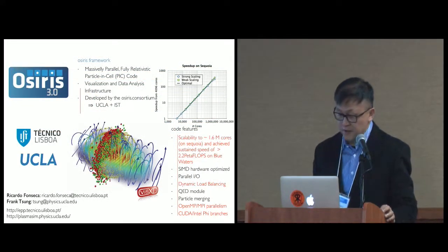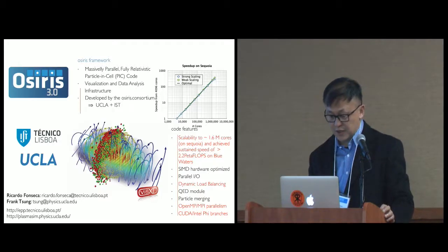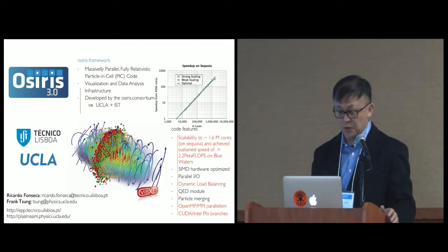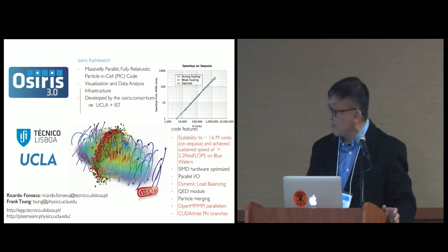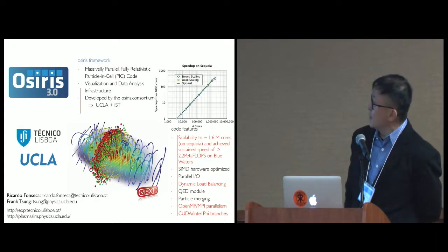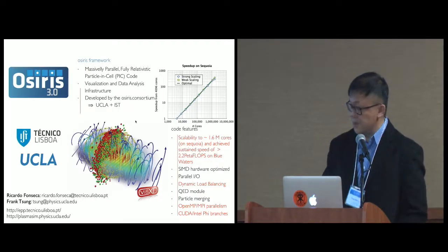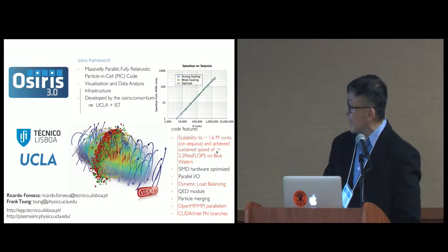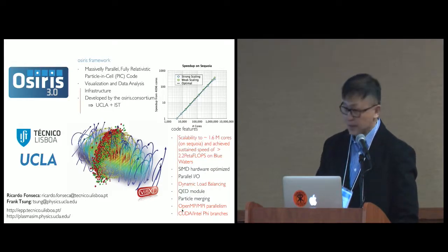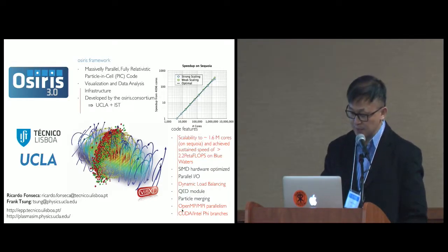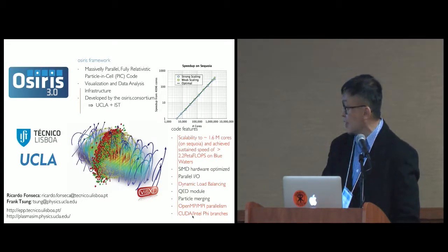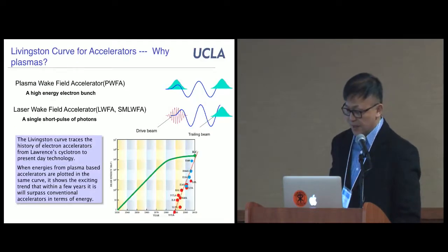Our particular version of PIC is called OSIRIS, a code jointly developed by UCLA and IST. It's a very mature code with many features. Most relevant to this audience: we've shown OSIRIS to scale up to about 1.6 million cores. It has dynamic load balancing, a hybrid OpenMP and MPI parallelization, and we also have branches for CUDA and the Intel Phi that have been developed.